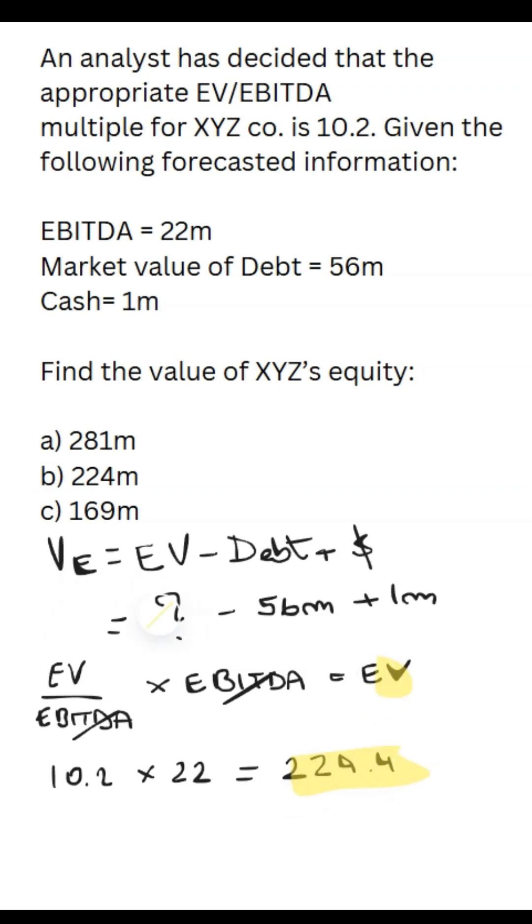And then we plug it in the formula, which gives us now 224.4, minus 56, plus 1. The combined total is 169.4, meaning C is the right answer.